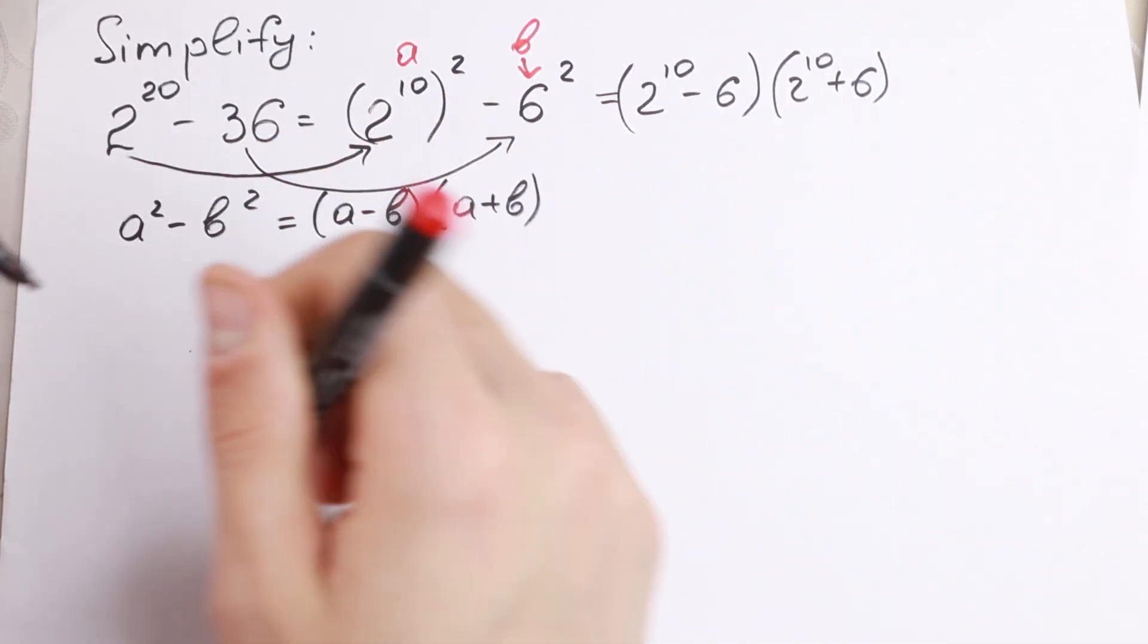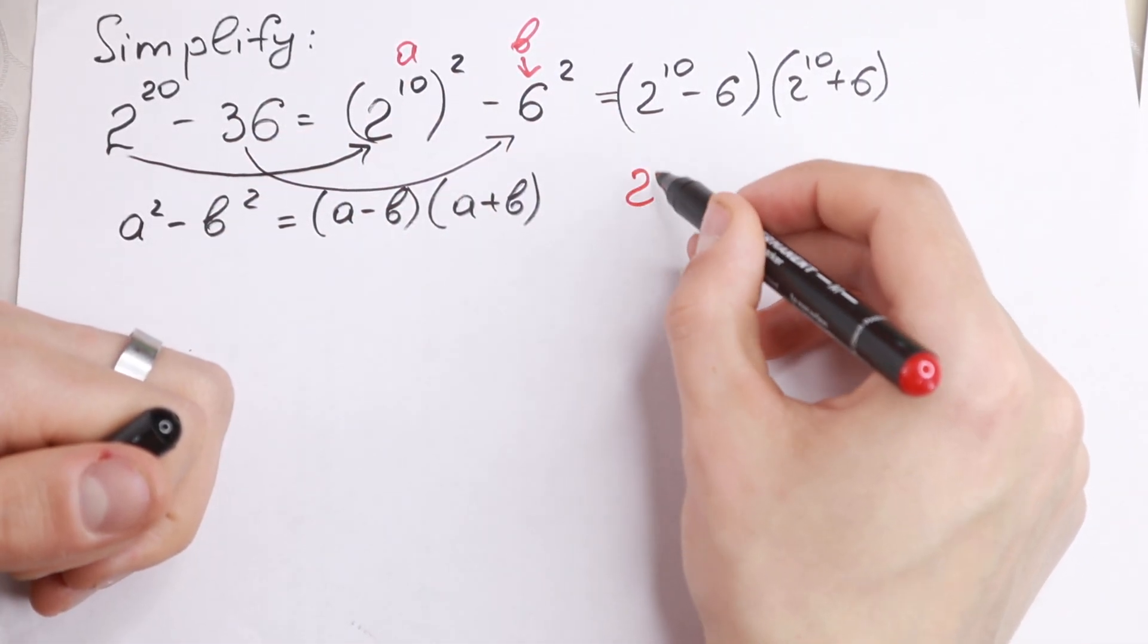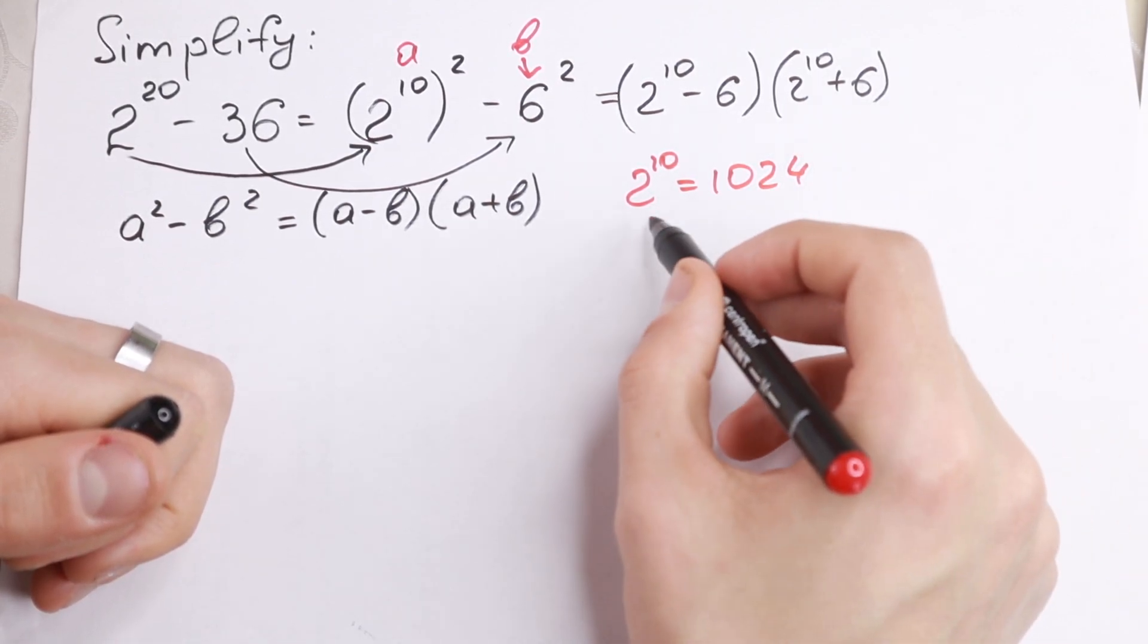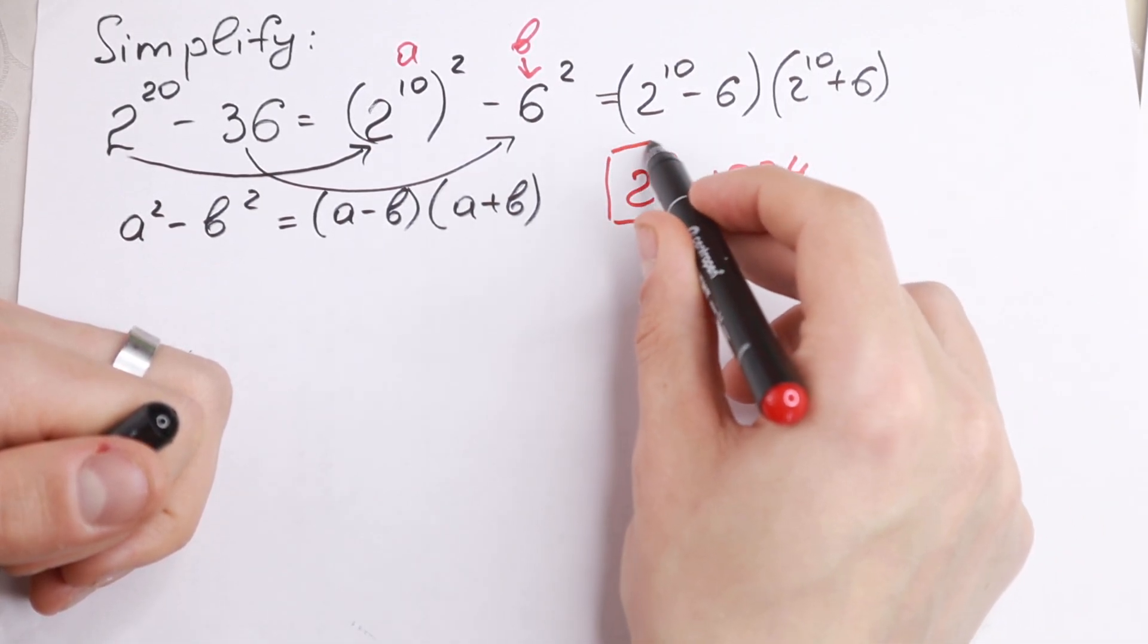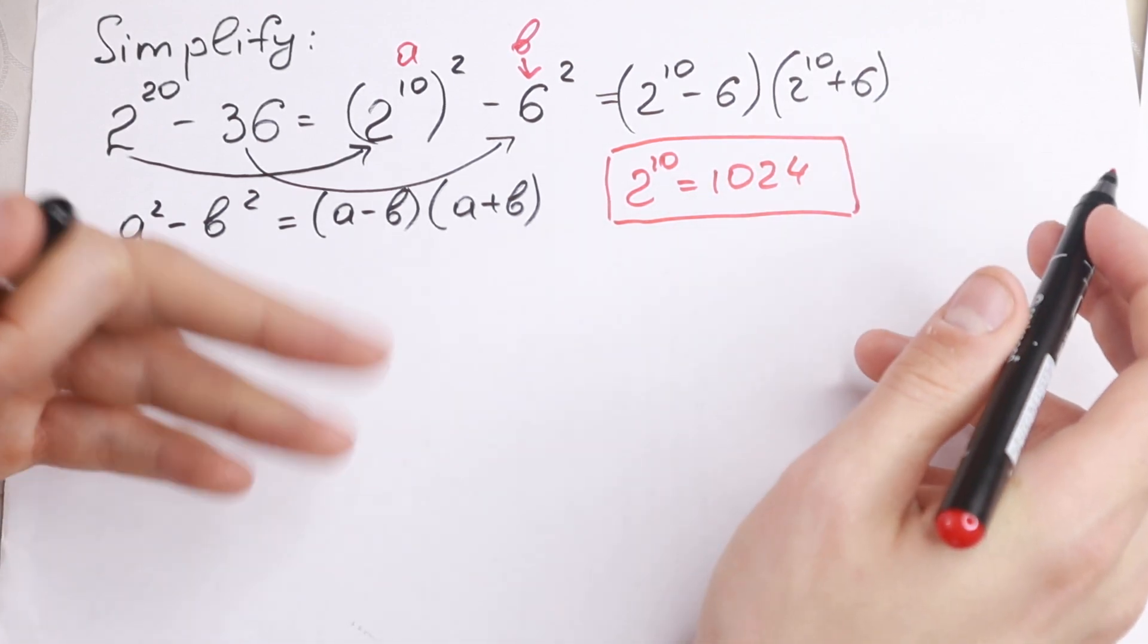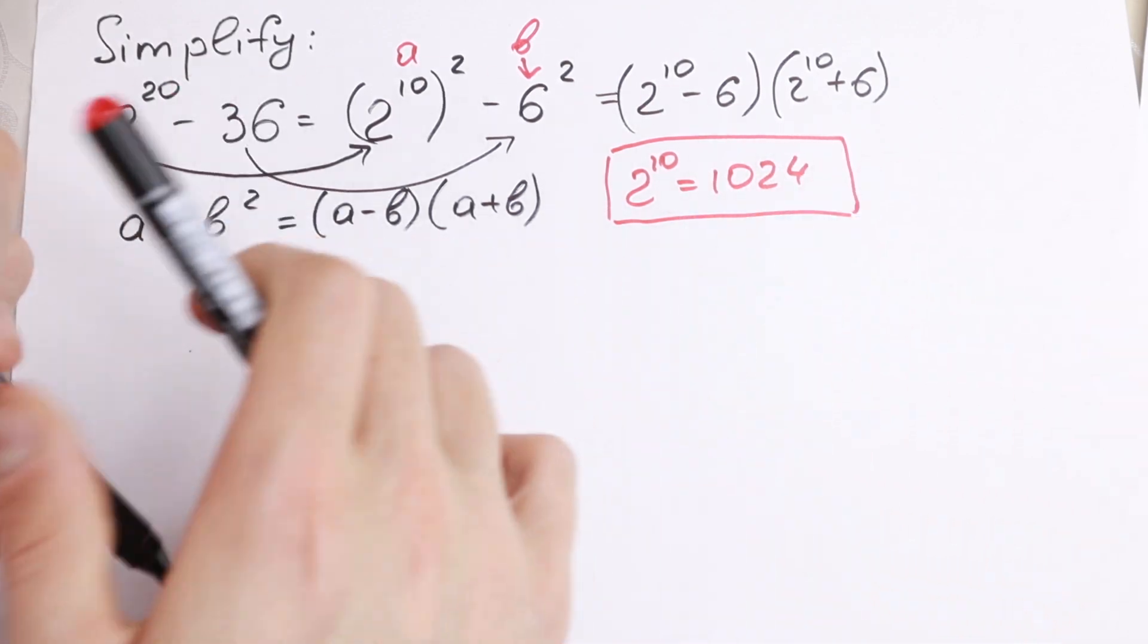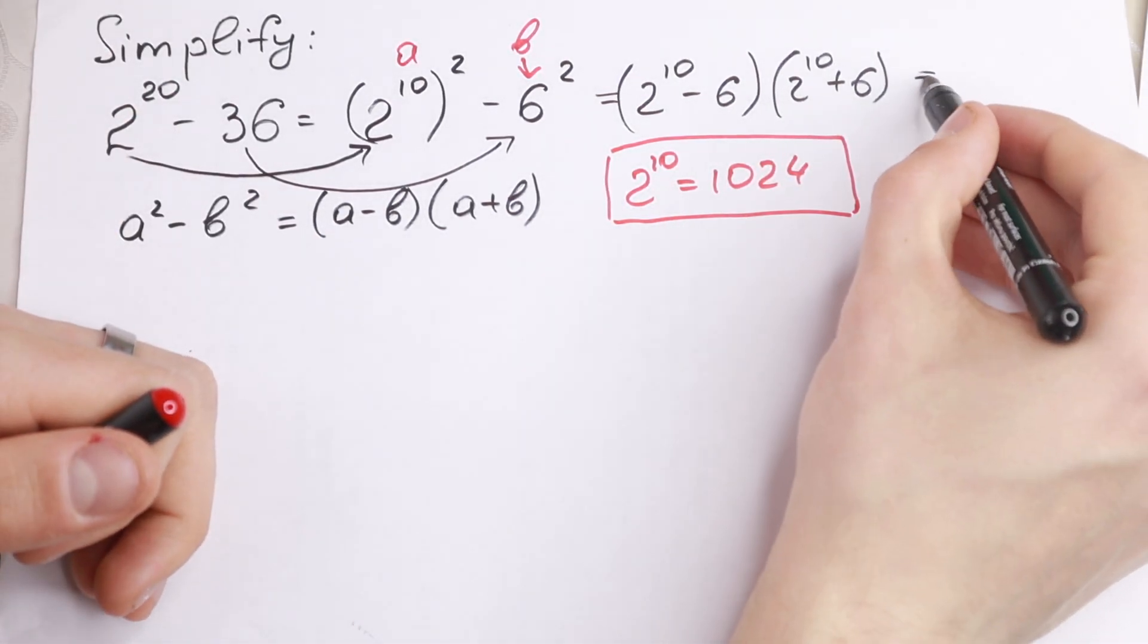So what we're going to do next? We need to know a really good case that 2 to the 10th power equal to 1024. It's really good to know it, I think a lot of students know it, but if you don't know, remember this or learn this. This is really good to know. In IT, I think that everyone knows this. So let's simplify this.